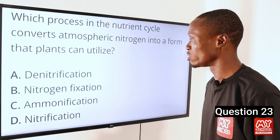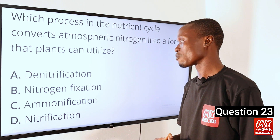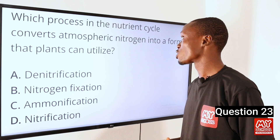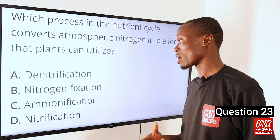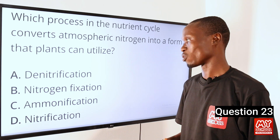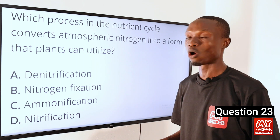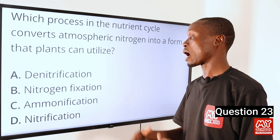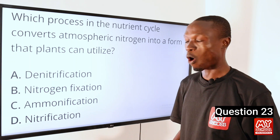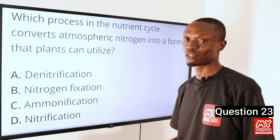The answer is option B, nitrogen fixation, because nitrogen fixation is the process whereby atmospheric nitrogen gas is converted into a form of nitrogen that plants can utilize for growth and development, such as ammonium ions or ammonia. This process is carried out by nitrogen-fixing bacteria such as Rhizobium or by lightning. So option B is the correct option.